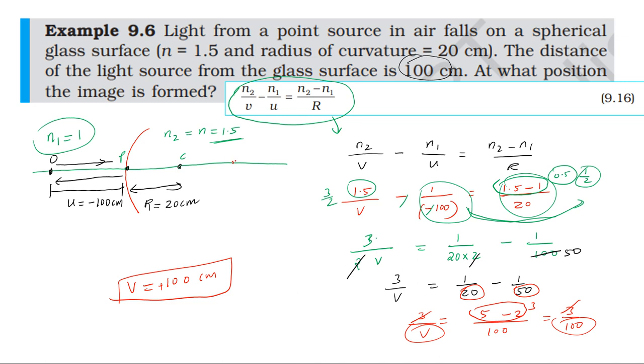Solving this gives v equals 100 cm. Since v is positive, the image is formed on the other side of the surface at a distance of 100 cm. Thank you so much for joining us.